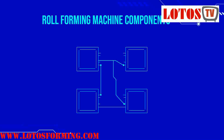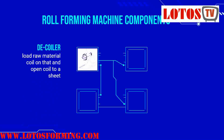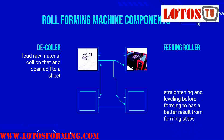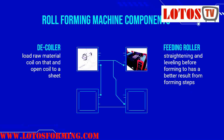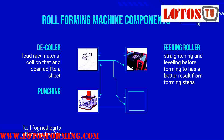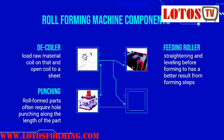Now let's talk about roll forming machine components. The first component is the decoiler, to load the raw material coil and feed material inside. Second is the feeding roller and tightening unit for leveling and feeding material into the tooling stands. Third is the forming stands. Fourth is the punching unit for any holes or notches according to your design and requirements. Then we go to the straightening head and final cutting.